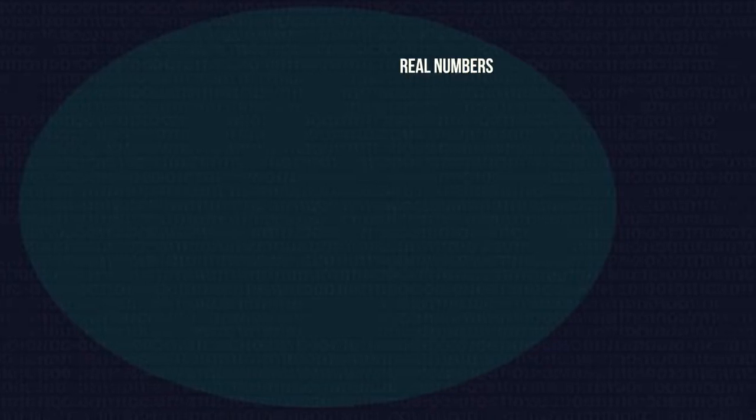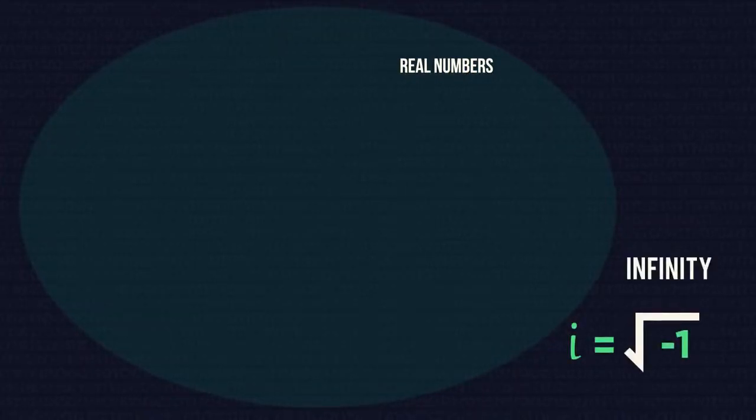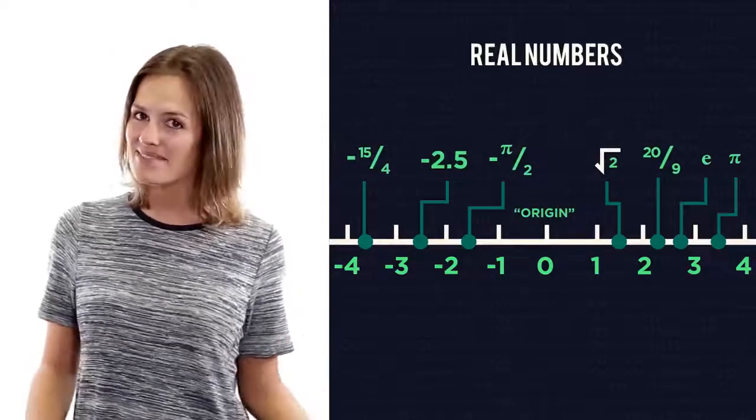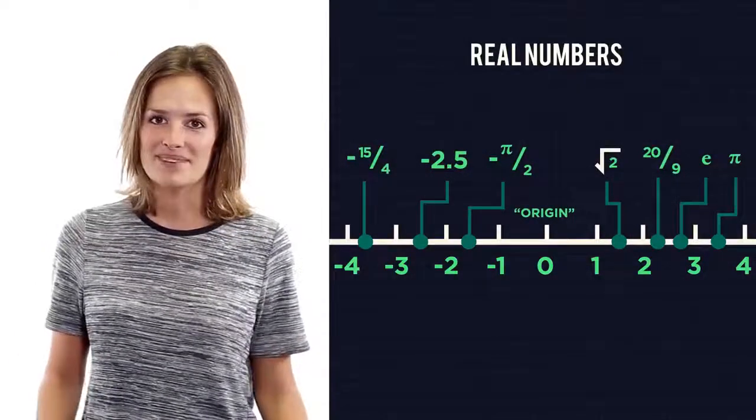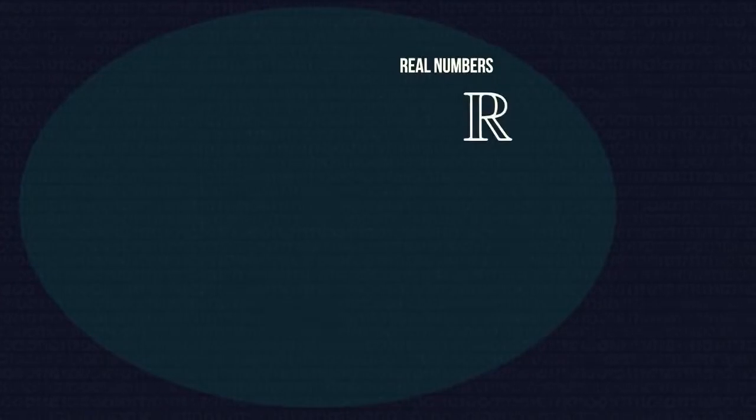Only imaginary numbers, like the square root of negative one and infinity, aren't real. But we don't really need to worry about them at this stage. If you can put a number on a number line, then it's a real number. This symbol is used to represent real numbers.